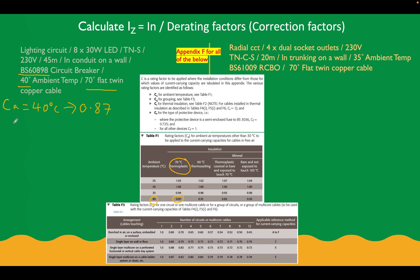We've also got a certain type of fuse, so CF — those are the only two correction factors we're going to include in our calculations. CF, for the type of protective device: where the protected device is a semi-enclosed fuse to BS3036, CF equals 0.725. For all other devices, CF is 1. We're not using a BS3036 fuse, so our CF is going to equal 1. We put it in there even though it seems redundant, so we can show our working.